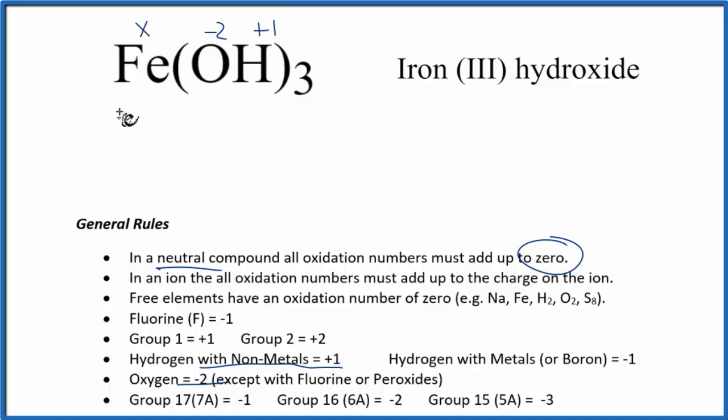We don't know the iron, let's just call that x. So now, because we know this all adds up to zero, we can just write an equation: x plus (-2 + 1) times the 3, that should equal zero.